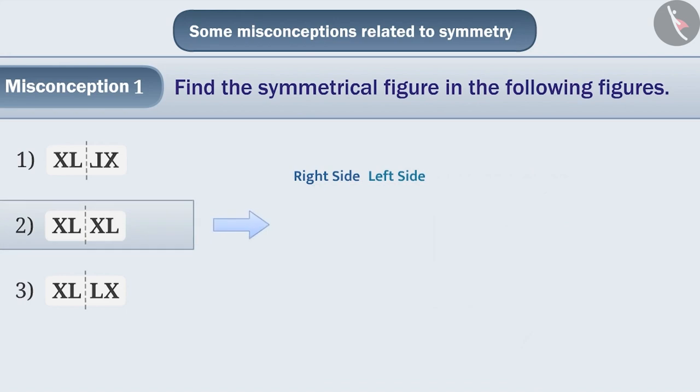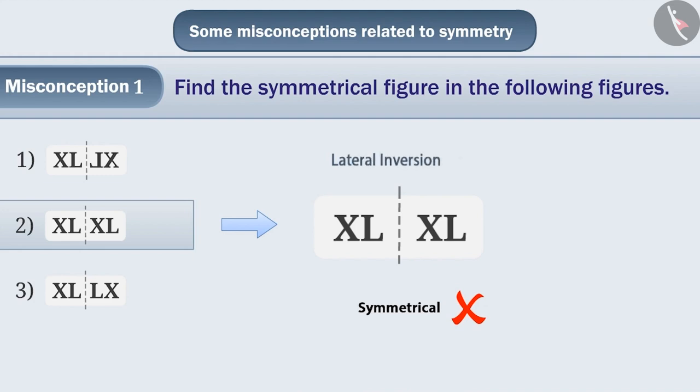Option 2 has the same shape on both sides. So they think that it is a symmetrical shape. But it is a wrong understanding because the lateral inversion of the shape is not clear here. Hence, it is not a symmetrical shape. That is, option 2 is the wrong answer.